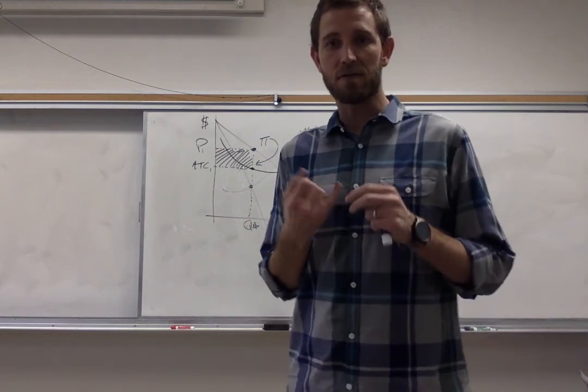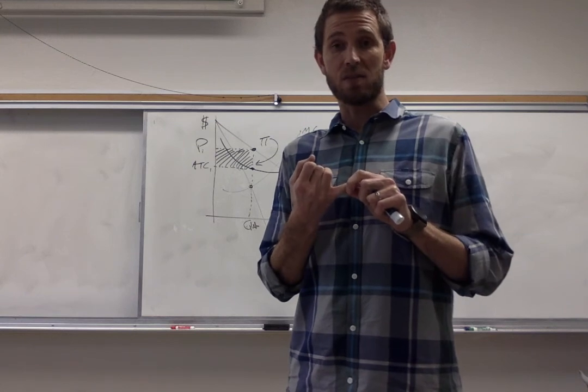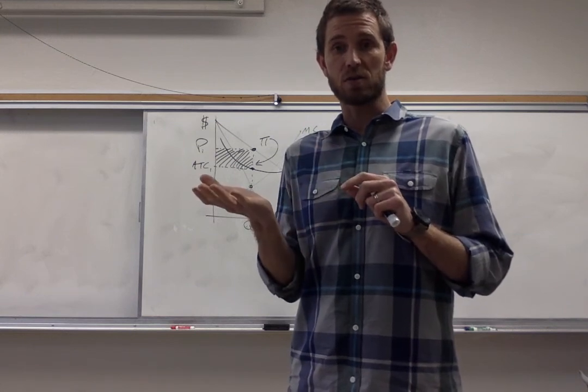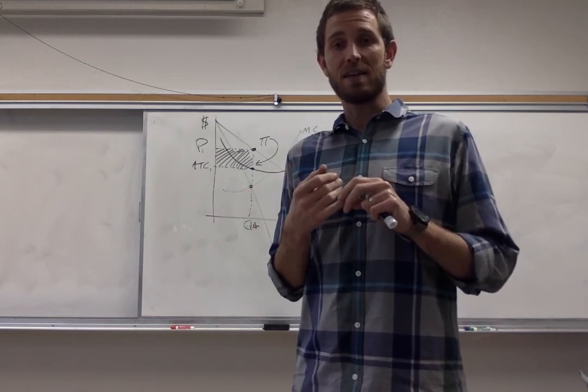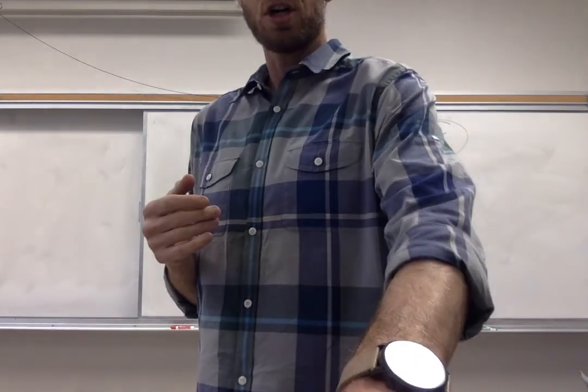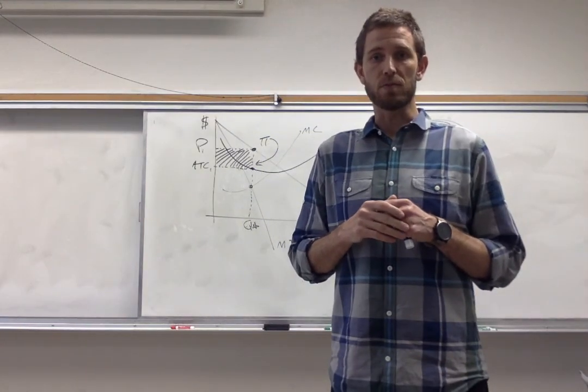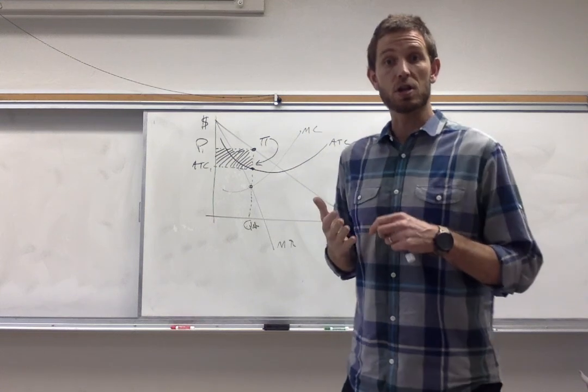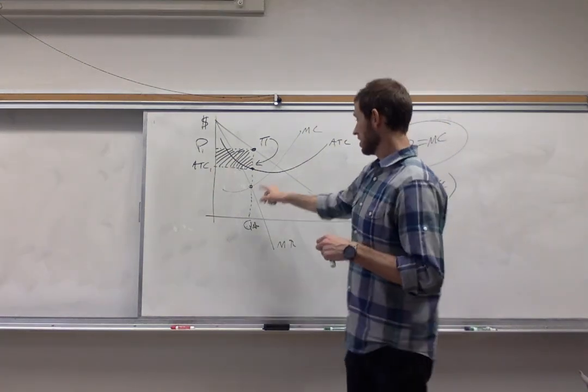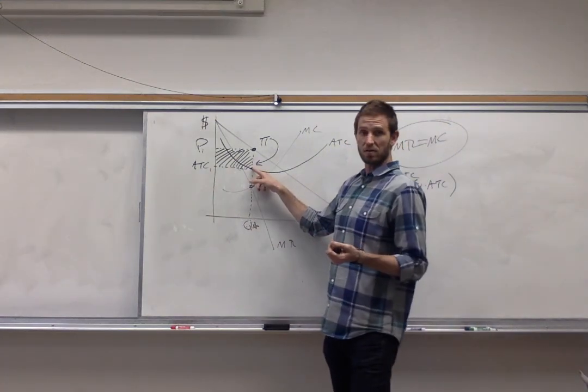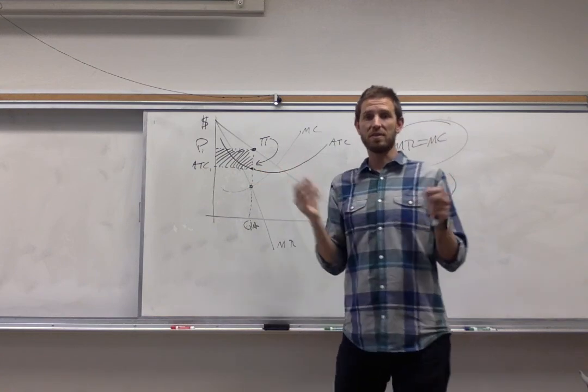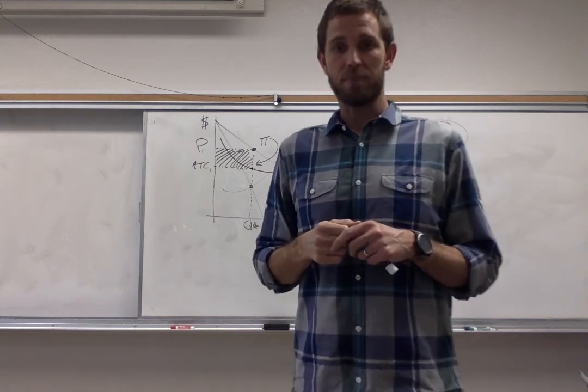So to summarize, our steps are first, find the profit maximizing quantity, marginal revenue equals marginal cost. Second, find the price that the firm is going to charge by reading up to the firm's demand curve. Third, you want to find the firm's total cost by reading up to the firm's average total cost. Once you have those elements, getting profit is easy. There you go.